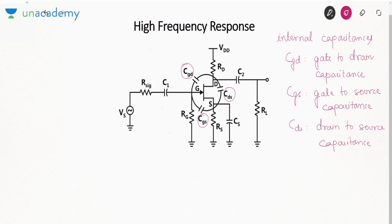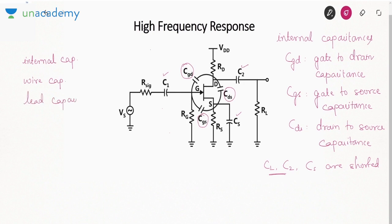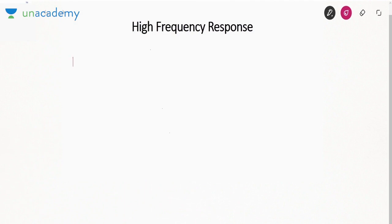When we are considering the internal capacitances, other capacitances like the coupling and bypass capacitors C1, C2, and CS are short-circuited — we only consider the internal capacitances. Additionally in high frequency response we can also consider wire capacitance and lead capacitance, which are parasitic capacitances present in the circuit due to connecting wires and the leads used to bring out the terminals.